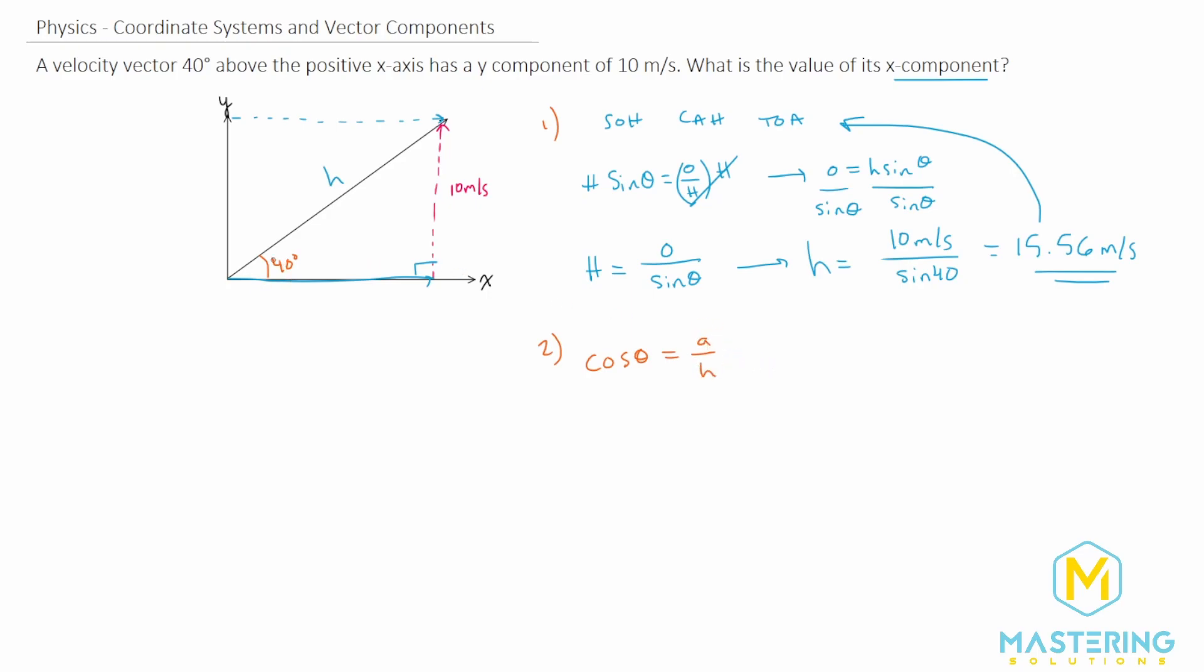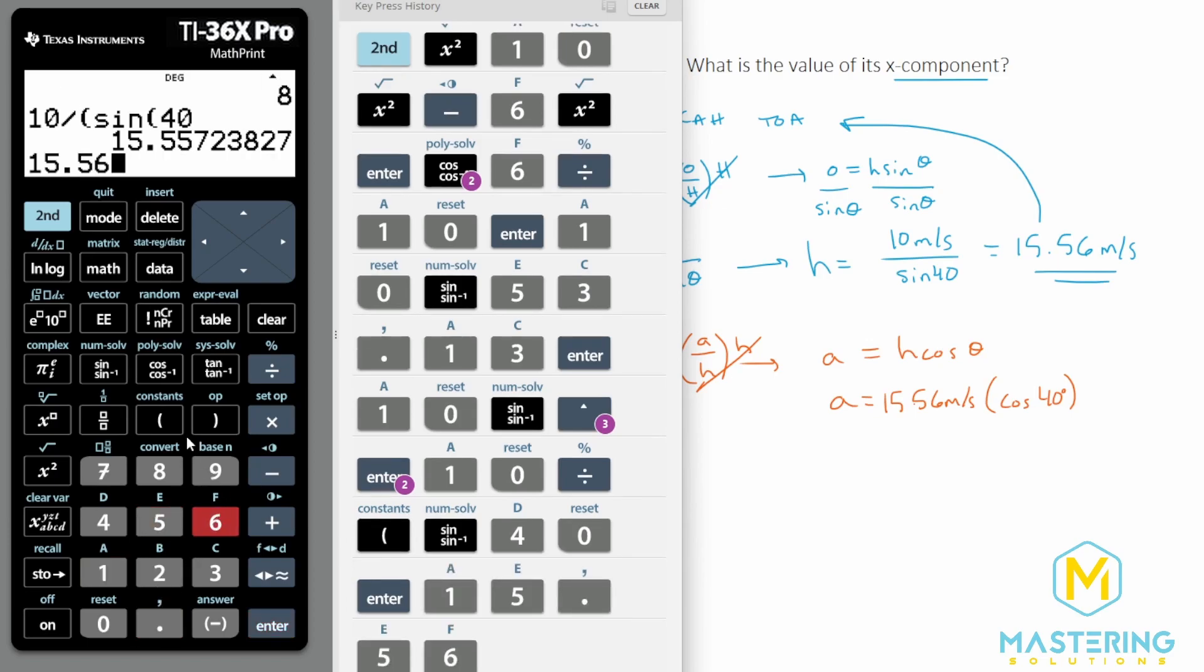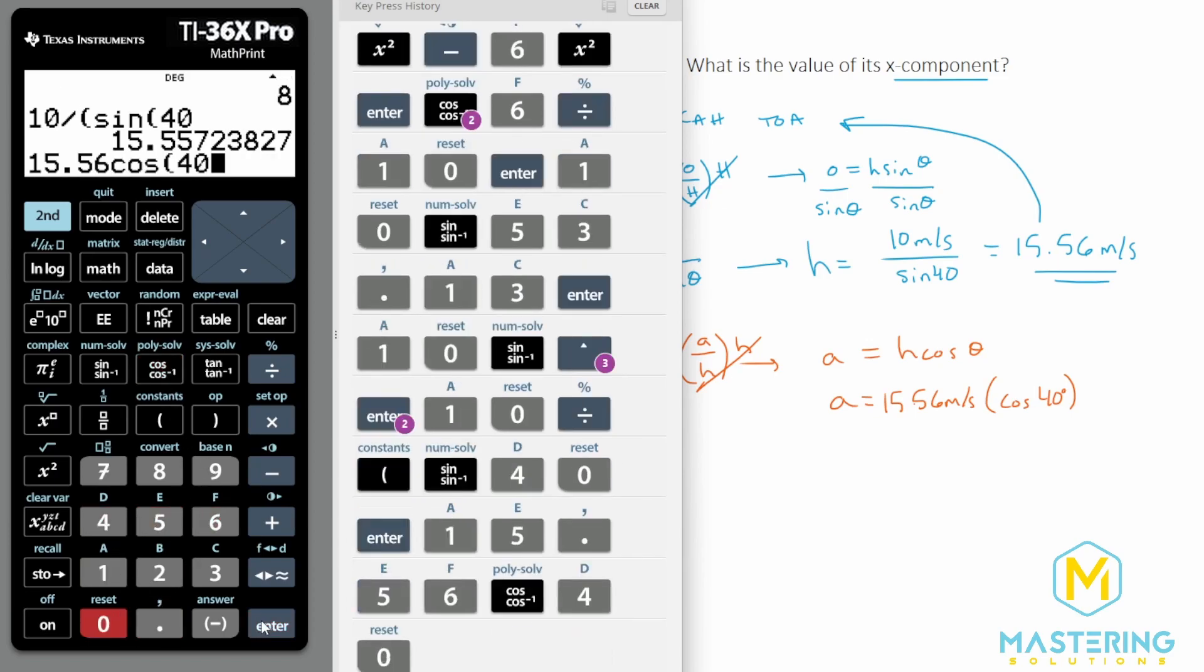Adjacent in this case, adjacent to the angle, is the x-component. So that's what we're trying to solve for. So if we multiply both sides of the equation by the hypotenuse, now we have adjacent is equal to h cosine of theta. So adjacent is equal to 15.56 meters per second times the cosine of the angle 40. So 15.56 times the cosine of 40 gives us 11.91, so we'll round that to 12 meters per second.